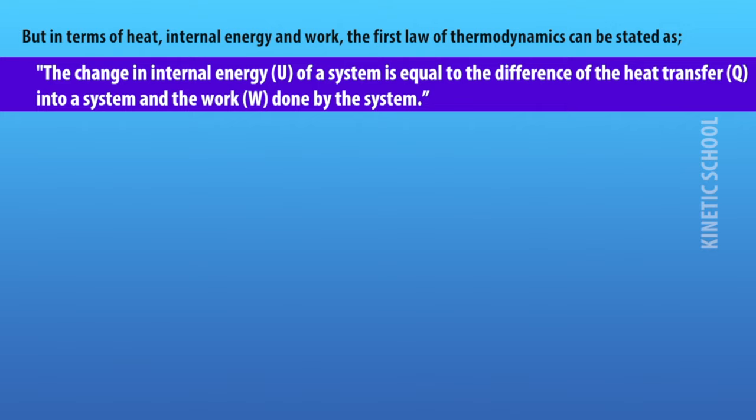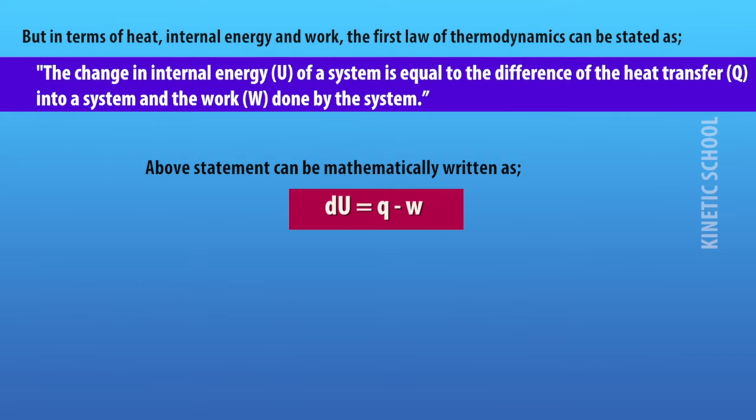In terms of heat, internal energy, and work, the first law of thermodynamics can be stated as: the change in internal energy of a system is equal to the difference of the heat transfer into a system and the work done by the system. This statement can be mathematically written as ΔU = Q - W.